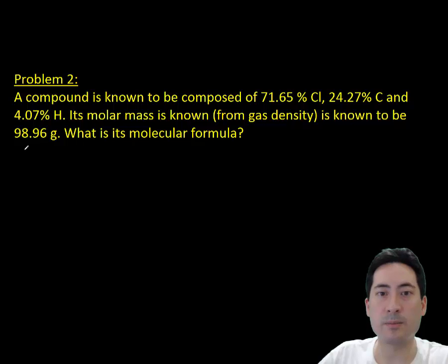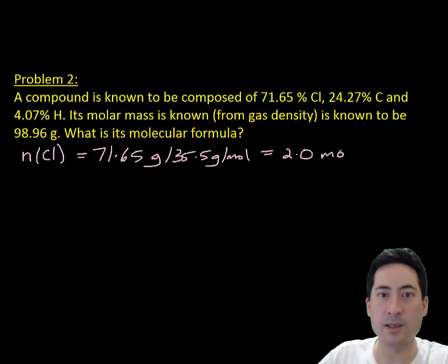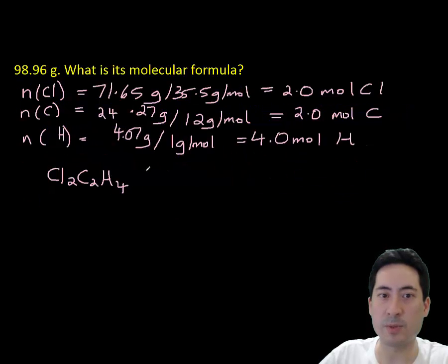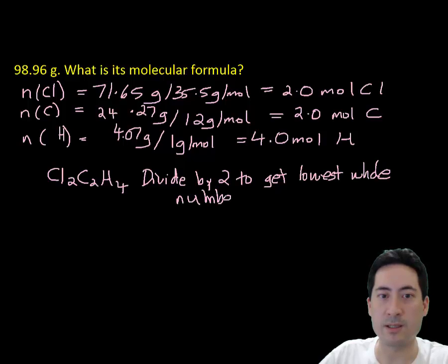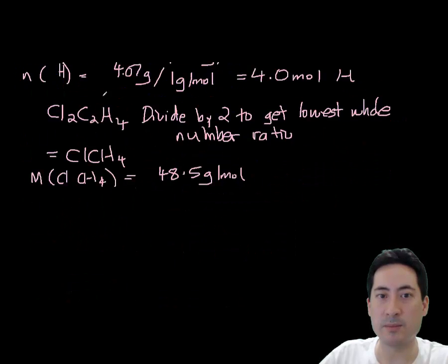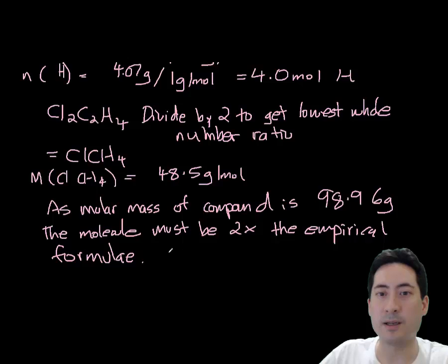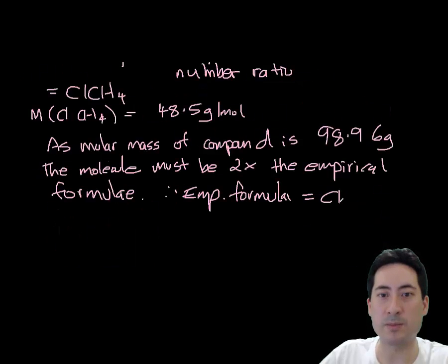One more example of molecular empirical formulas. A compound has 71% chlorine, 24% carbon, and 4% hydrogen. We know its molar mass from experiments to be 98.96 grams per mole. What's the molecular formula? And so we again convert that to grams to get the moles of each of these. We can then do the ratios, divide, get it down to the lowest whole number ratio. So we know empirical formula is ClCH2. Now the molar mass of that is 48.5 grams, but the molar mass is 98, and so that's exactly two. So we know the molar mass of the compound is double that, so the molecular formula must be double the empirical formula. So we then know that the molecular formula is Cl2C2H4.